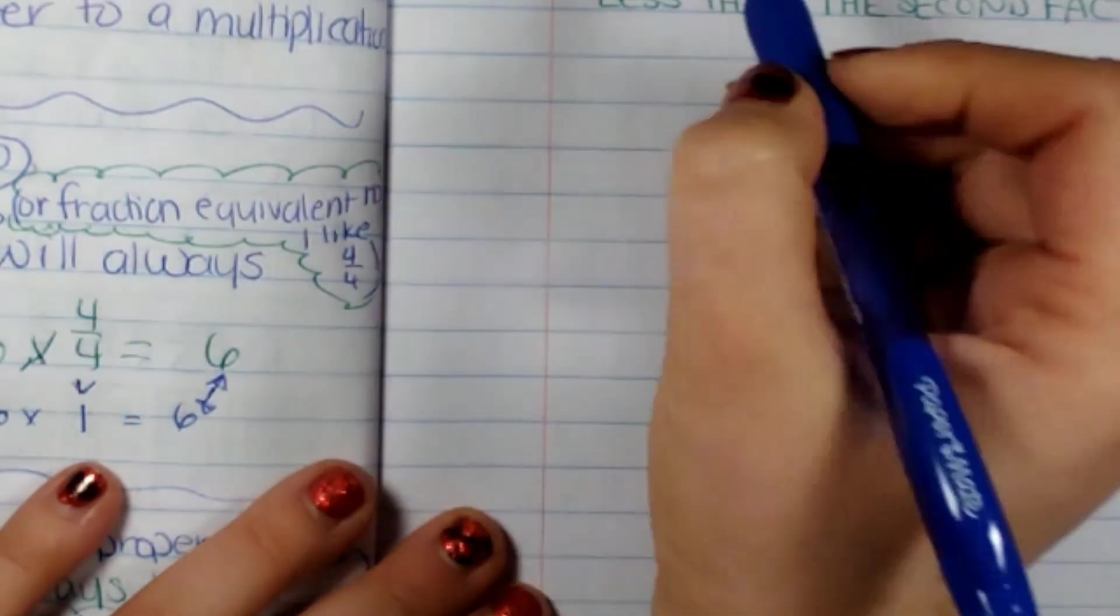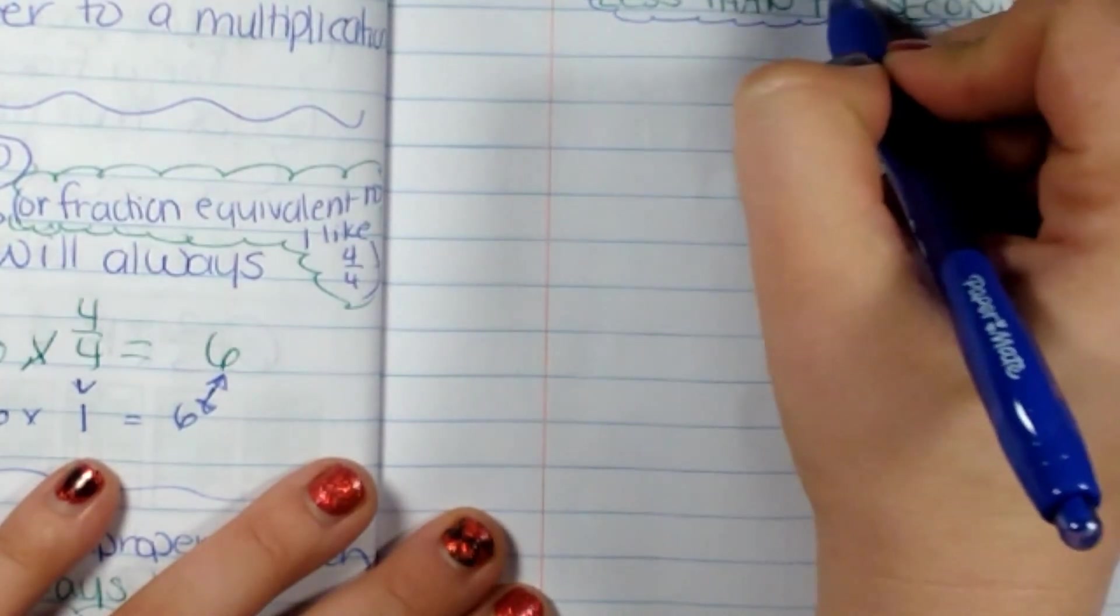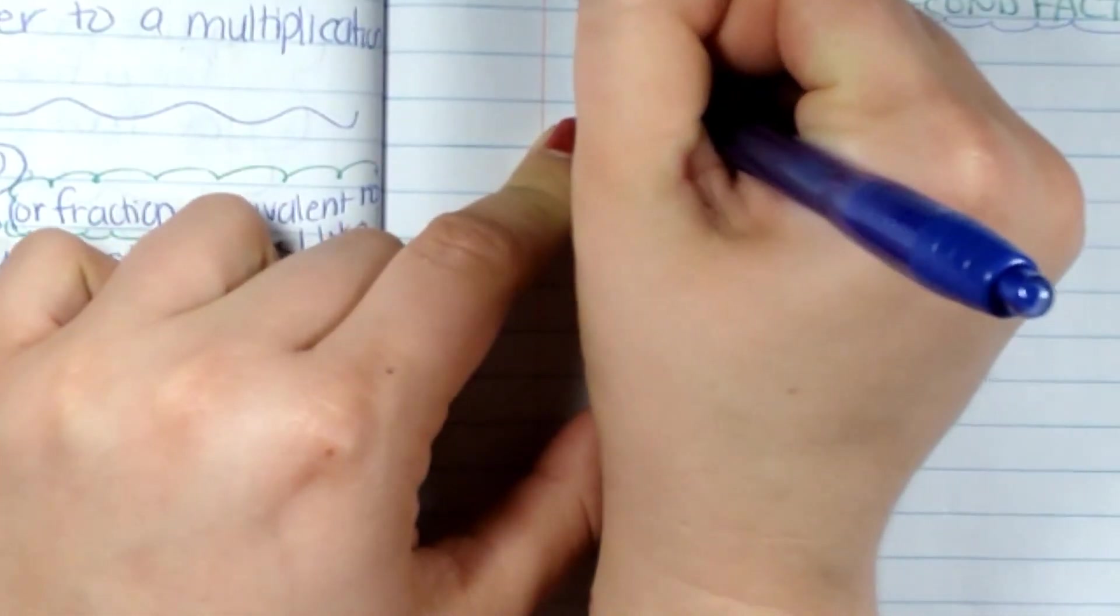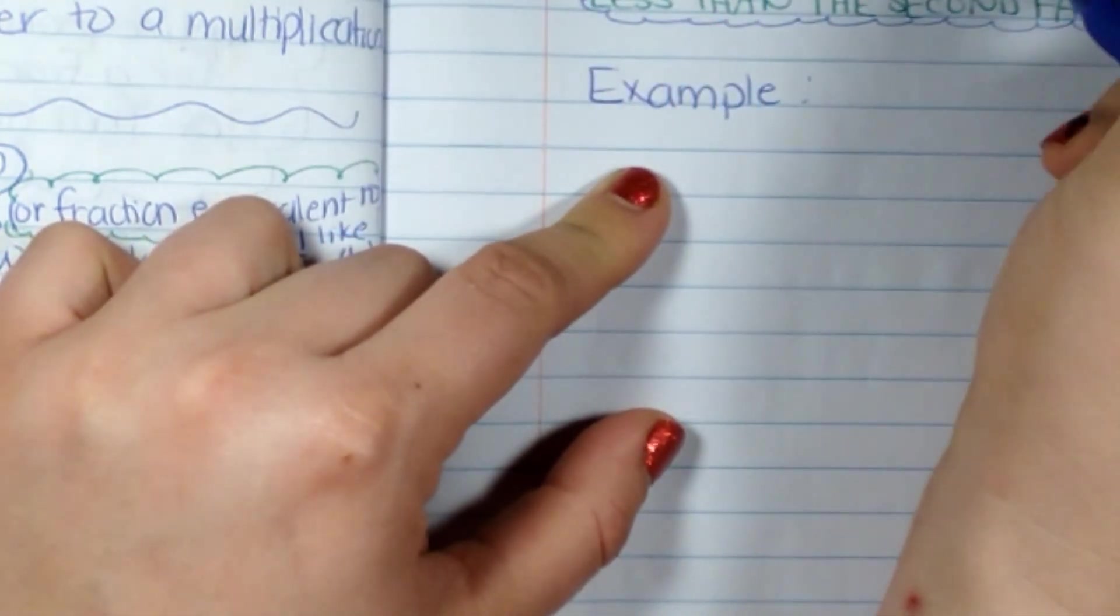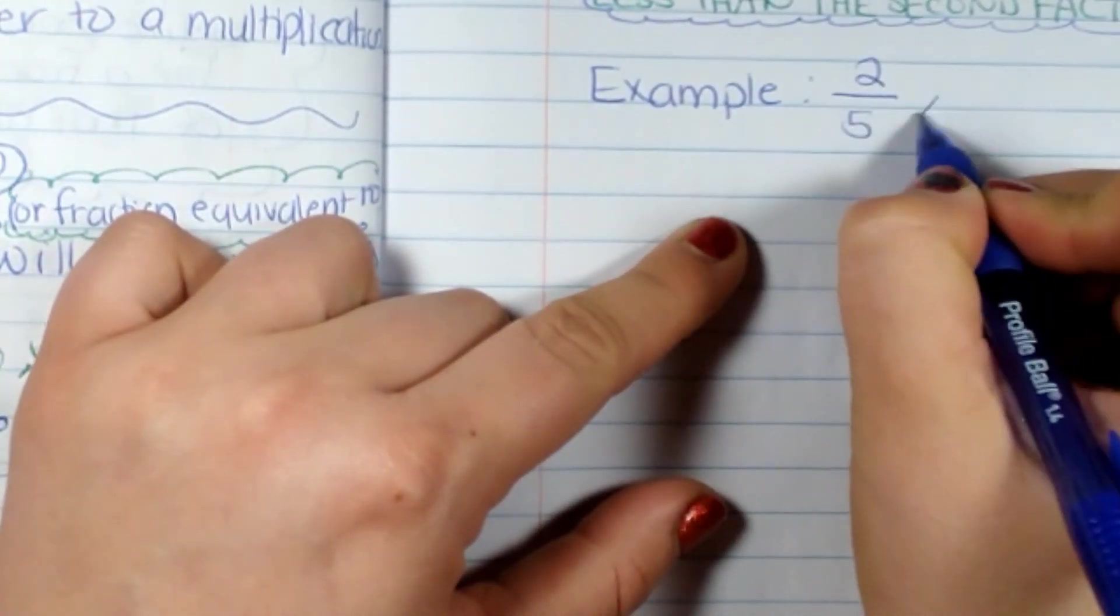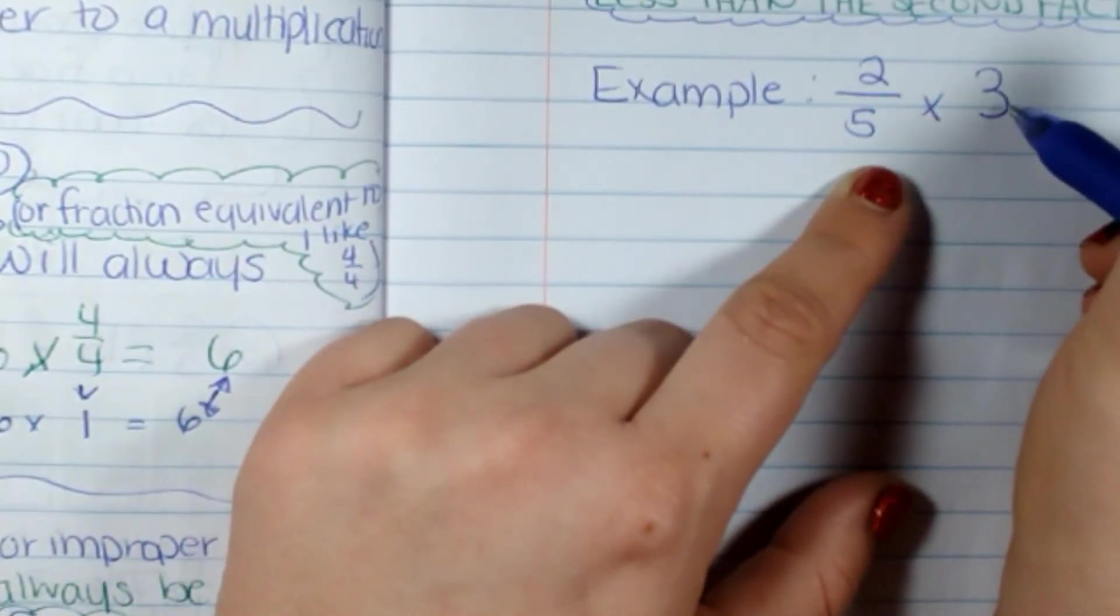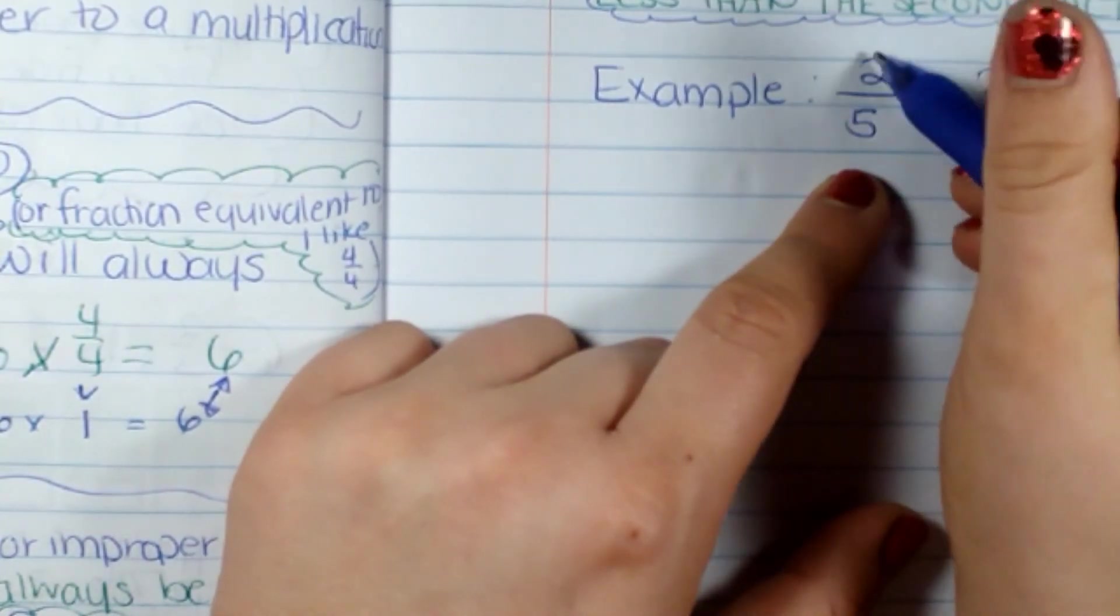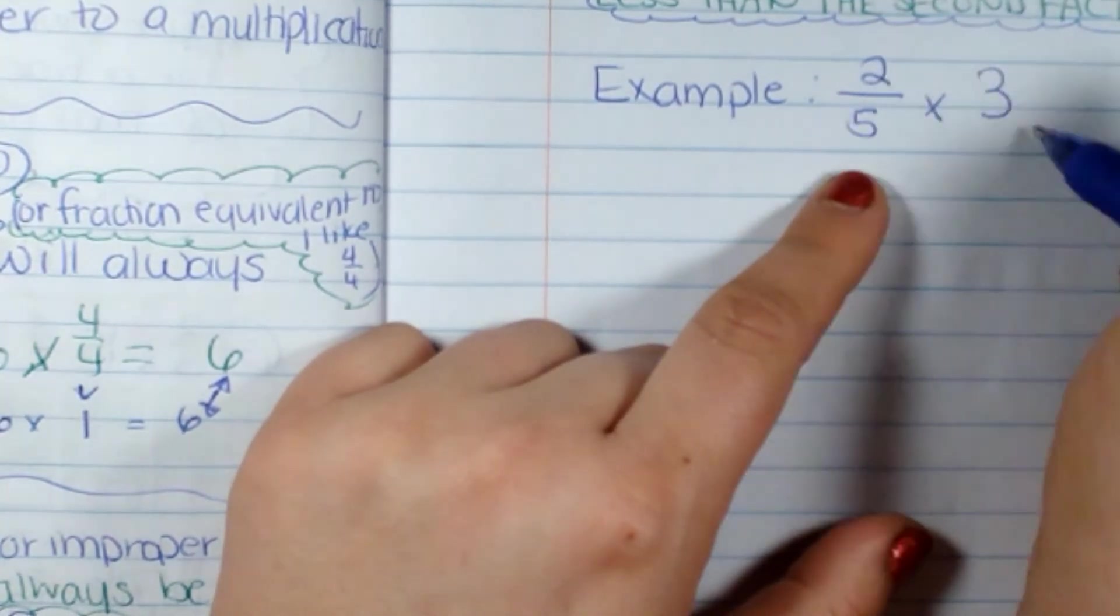Now why is that? That is because, remember when we talked about yesterday, when I have a fraction in front of a number such as two-fifths times three, I'm saying two-fifths of three. So two-fifths of three is going to be a small portion or fraction of three. So it's going to be smaller than the second number.